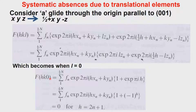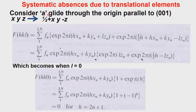So the systematic absence associated with an A glide parallel to the z axis — where the glide plane is perpendicular to the 001 plane — is that F(hk0) equals 0 when h is odd, i.e., h = 2n+1. This therefore tells us that we can have systematic absences due to glide operations.